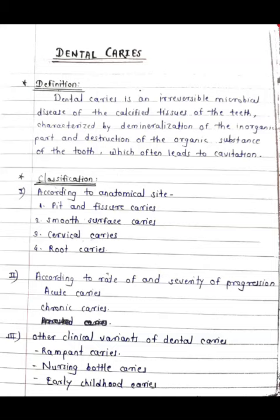Dental caries can be classified into various types. Based on anatomical site, it can be classified into pit and fissure caries, smooth surface caries, cervical caries, and root caries. Based on rate and severity of progression, it can be rapid onset or gradual onset.